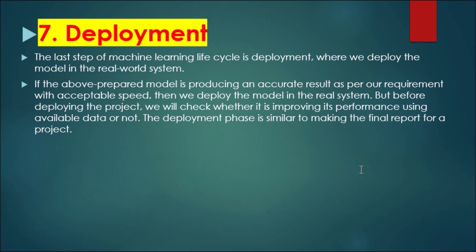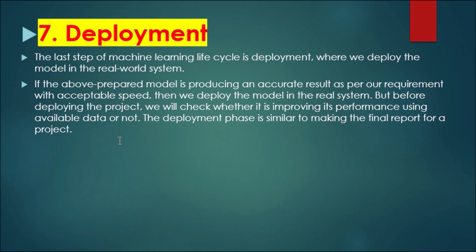The last step of the machine learning life cycle is deployment. In this step, we deploy the model in the real-world system. If the prepared model is producing an accurate result as per our requirement with acceptable speed, then we deploy the model in the real system. But before deploying the project, we check whether its performance is improving using available data or not. The deployment phase is similar to making the final report for a project.